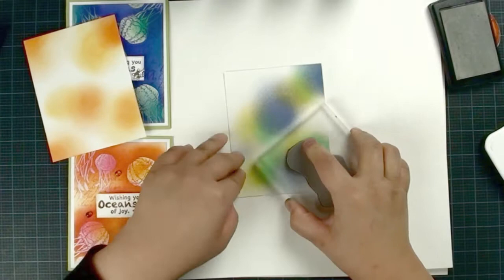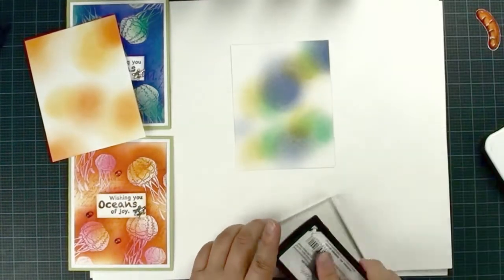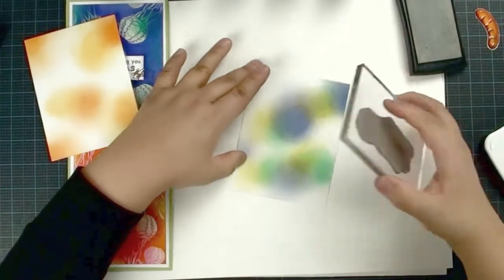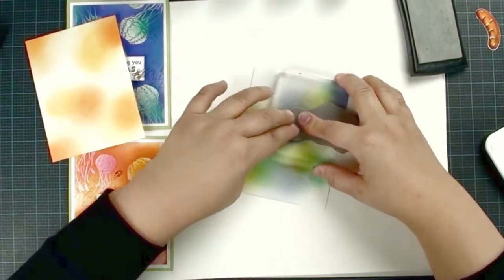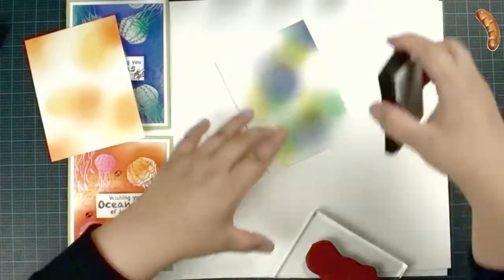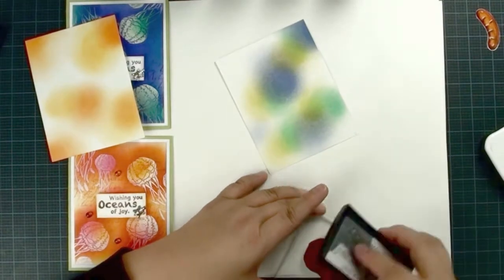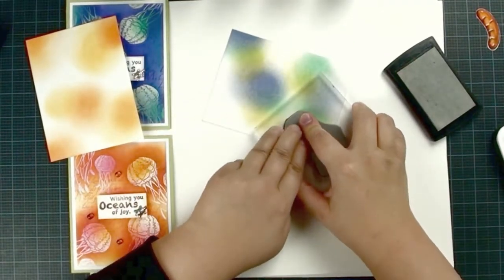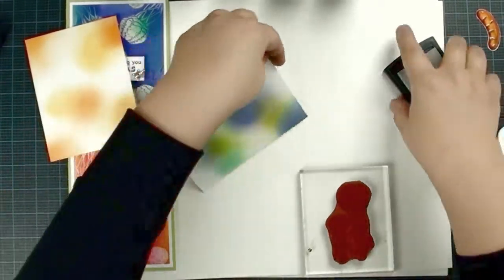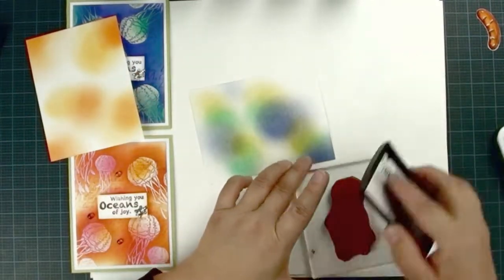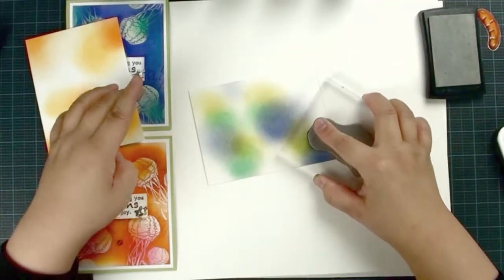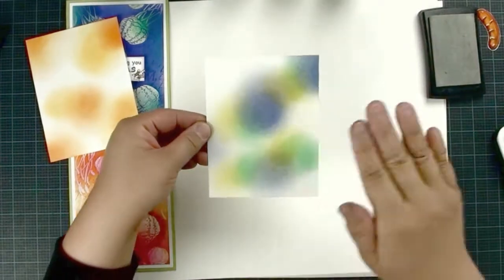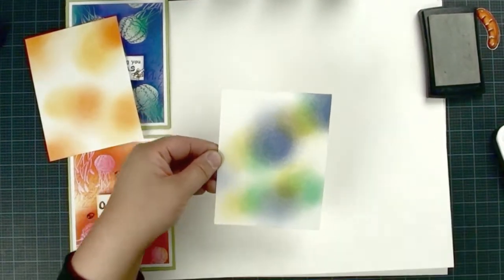We're going to adjust the stamping position. VersaMark is see-through, you cannot really see, so you have to memorize where you put your jellyfish. I have one, two, three. You can stamp anywhere you like, it doesn't really matter. I'm going to ink the other one in this corner. Just be careful. Try not to overlap with the same image.